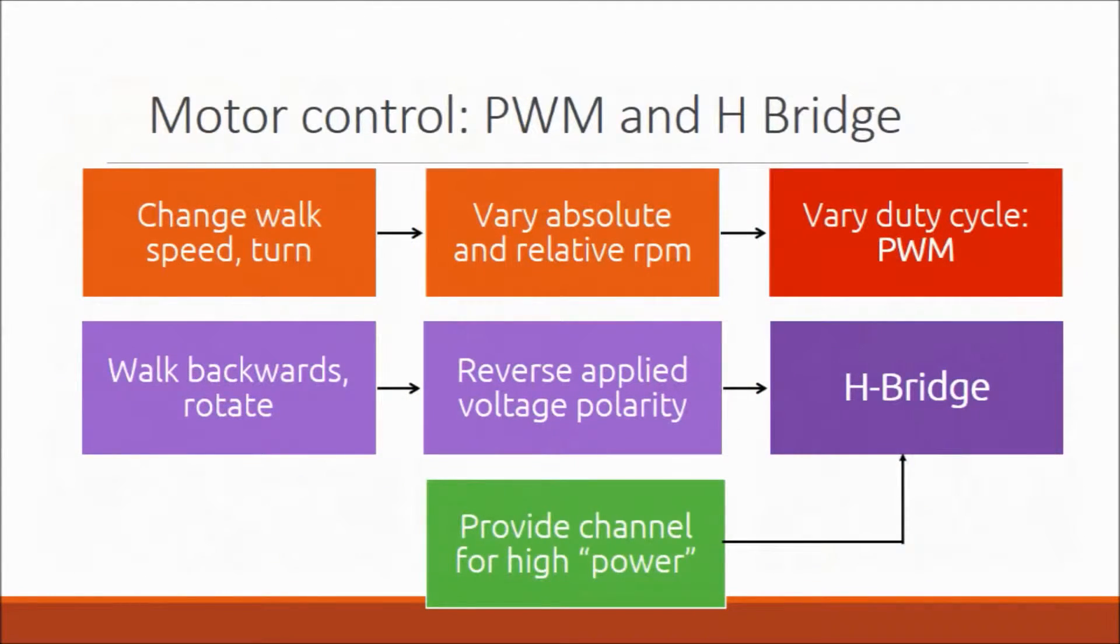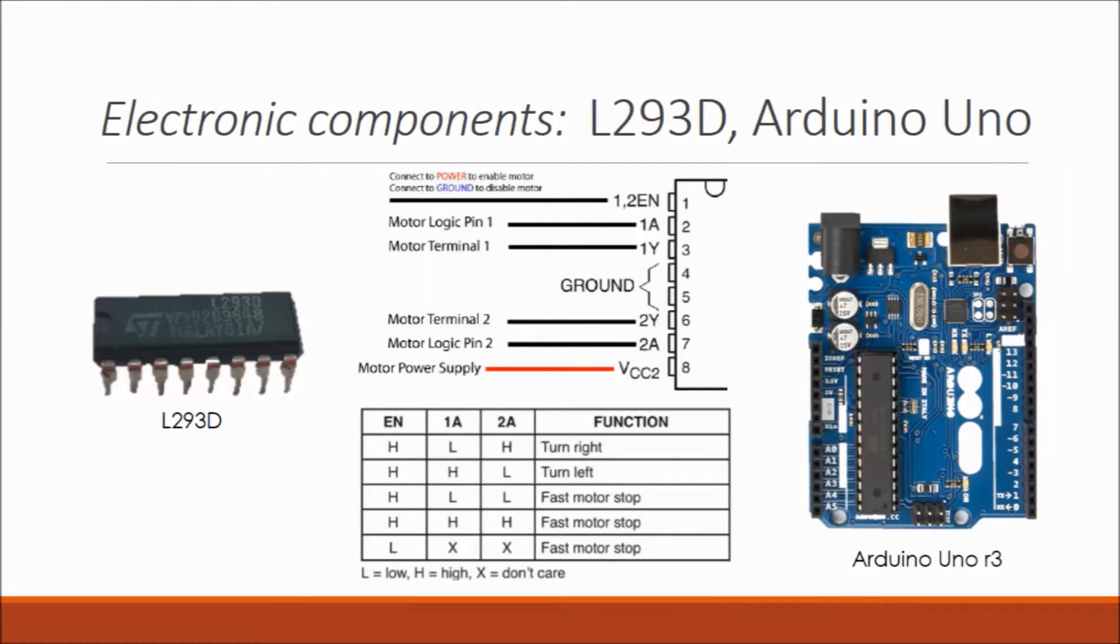A function chart is shown. To turn, motor RPM is varied through PWM. H-bridges allow the reversal of motor voltage polarities for both rotation, and provide an independent power channel for the motors. Two primary electronic components are shown.